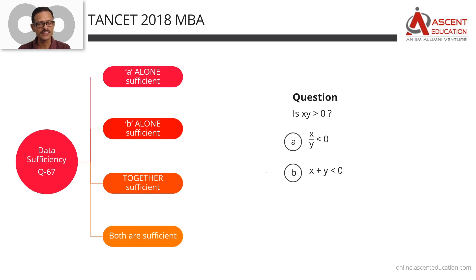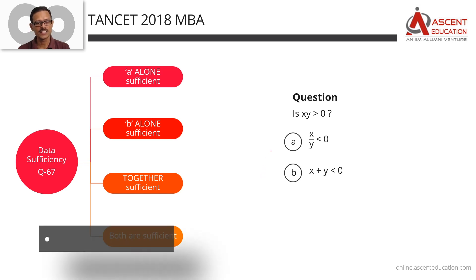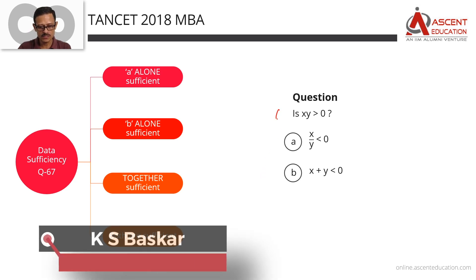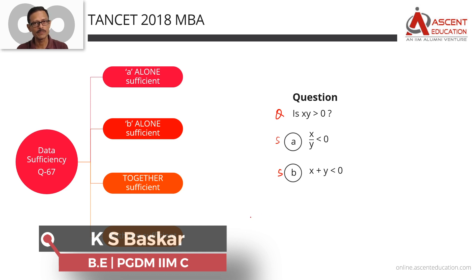This is a TANSAT past year paper video solution. It is the TANSAT 2018 MVA paper, Question 67, a Data Sufficiency question. In a DS question, there is a question followed by two statements: Statement A and Statement B.